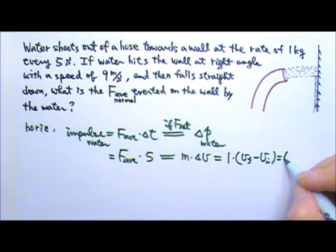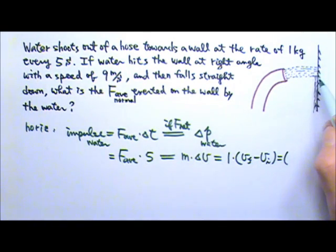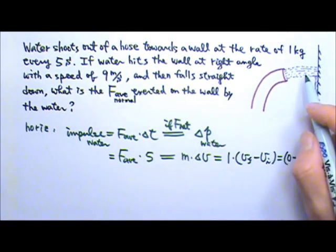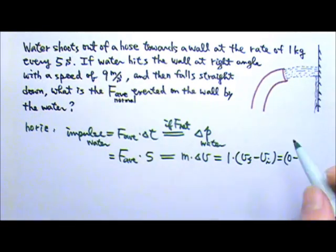And then the delta V would be the final velocity minus the initial velocity. Since the water hits the wall and then loses all its horizontal velocity, the final velocity is 0. And the initial velocity, the horizontal component is the complete 9 meters per second.